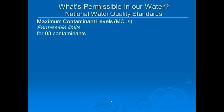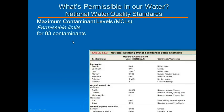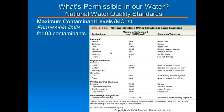So what are the standards — what is permissible in our water? We have maximum contaminant levels, or MCLs, which set permissible limits for 83 contaminants. For example, if arsenic is above 0.05 milligrams per liter, it is considered highly toxic.